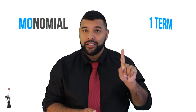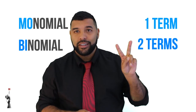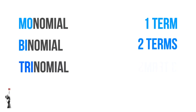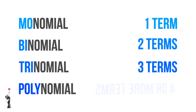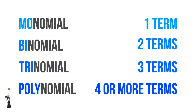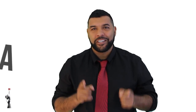Monomial: 1 term. Binomial: 2 terms. Trinomial: 3 terms. Polynomial: 4 or more. So that's it from me. Thanks for watching. All the best.